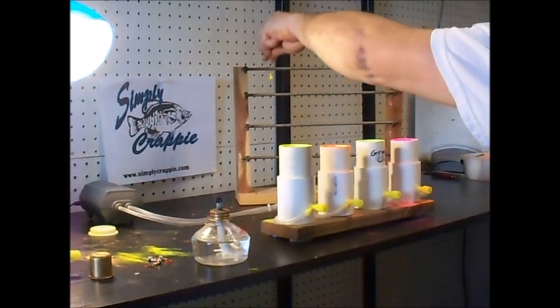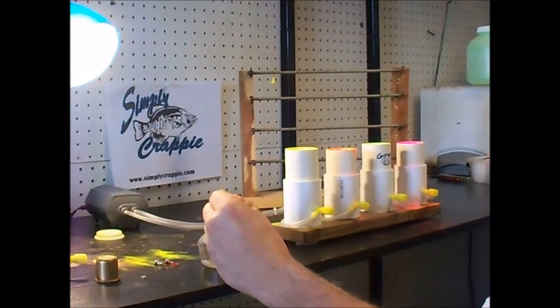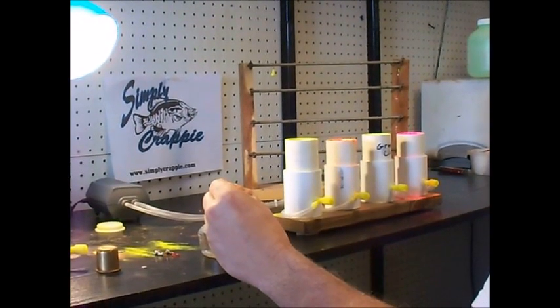Once heated, quickly dip the jig head in the fluidized paint. Using this method you are able to get an even coating on the jig head while keeping the eyelet clean.